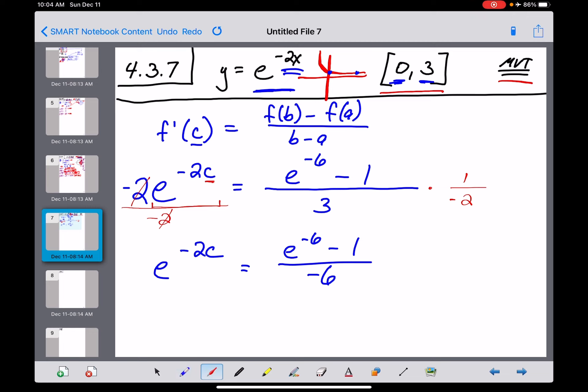Next thing we need to get rid of is the e, the base of this exponent, and we get rid of an e with a natural log of both sides of that equation. Now, the natural log and the e cancel out, and then that negative 2c comes down to the base level. And as far as where we are right now, that is certainly not a natural log I can evaluate by hand, so I'm just going to leave it as the natural log of this messy fraction, e to the negative 6th minus 1 all over negative 6.